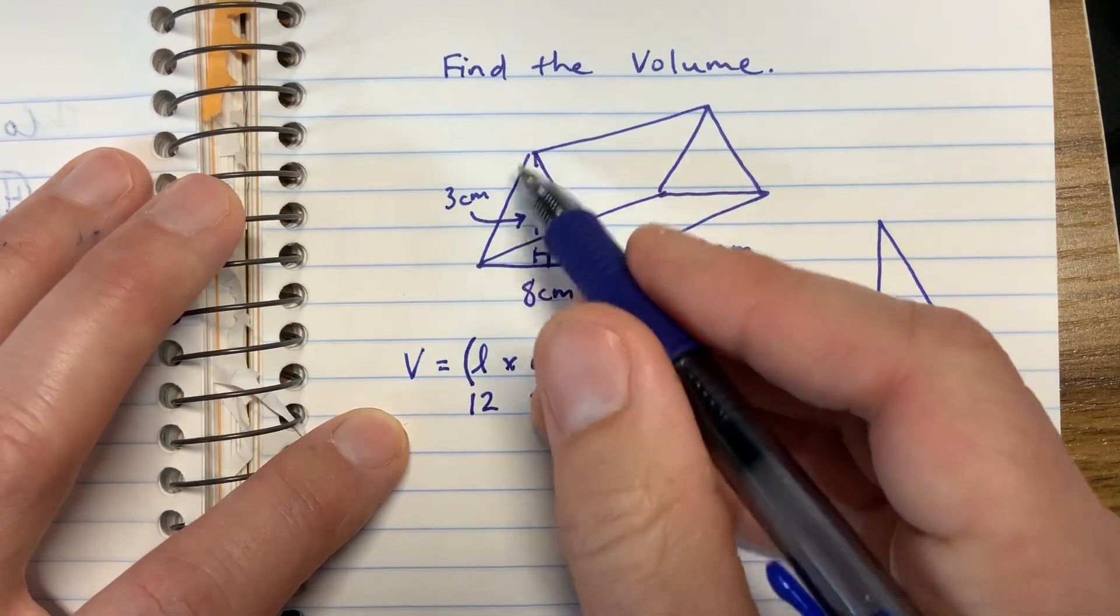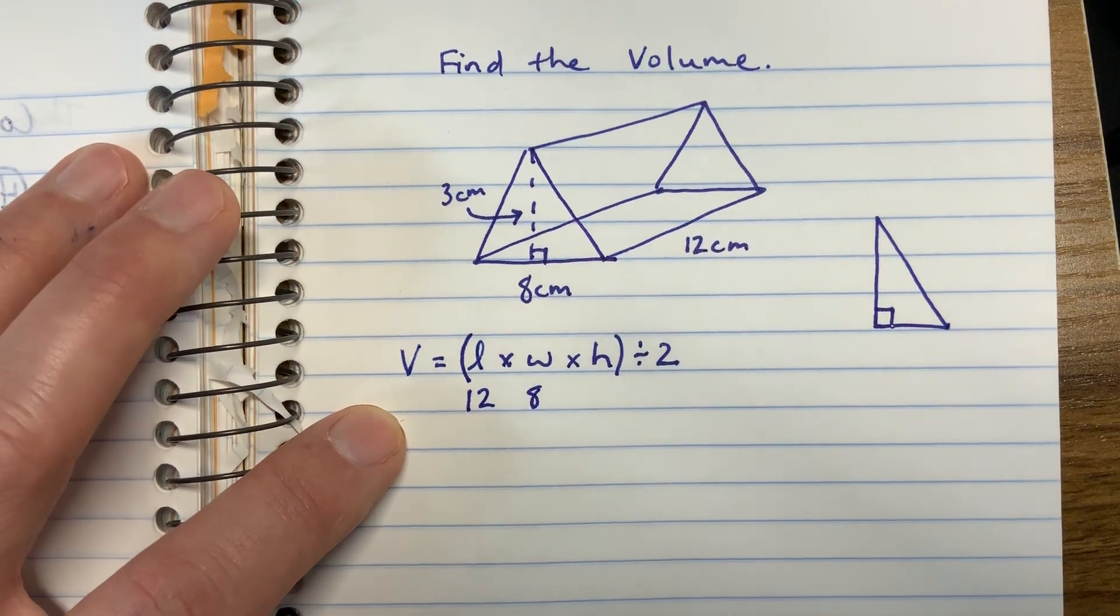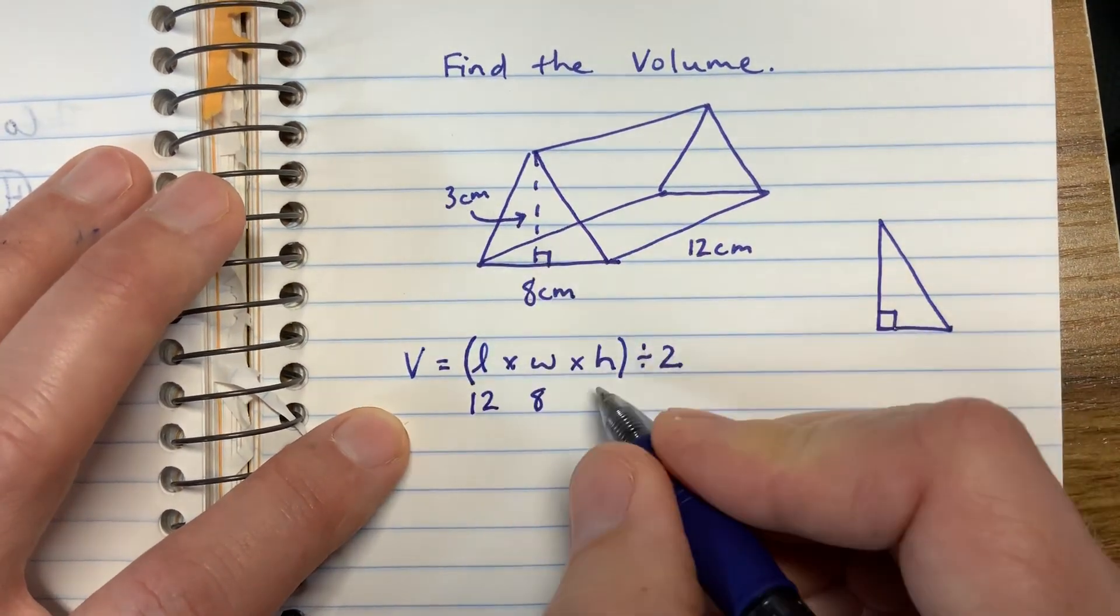In this particular triangle, these sides are not the height because they're diagonal lines, okay? So the height here is 3 centimeters.